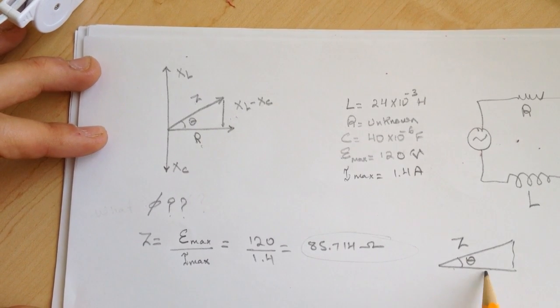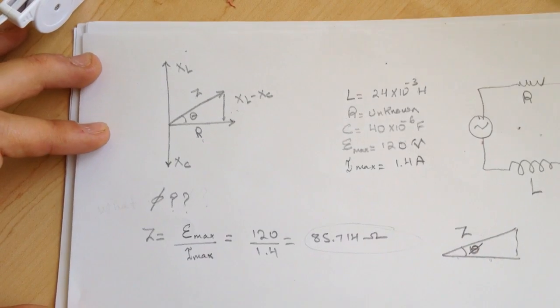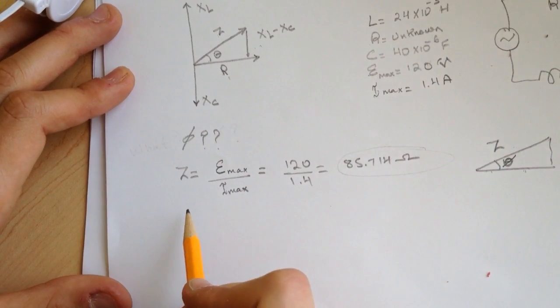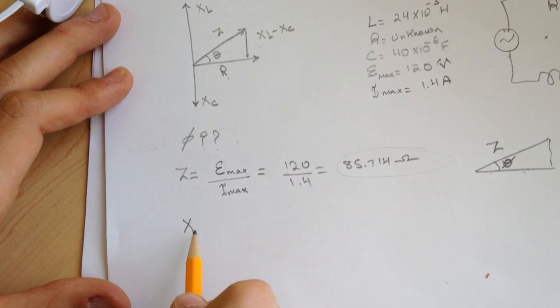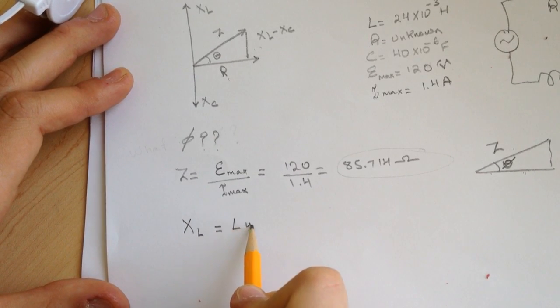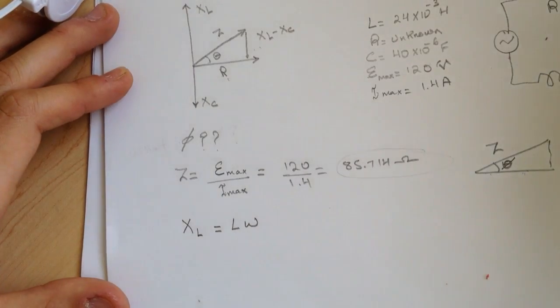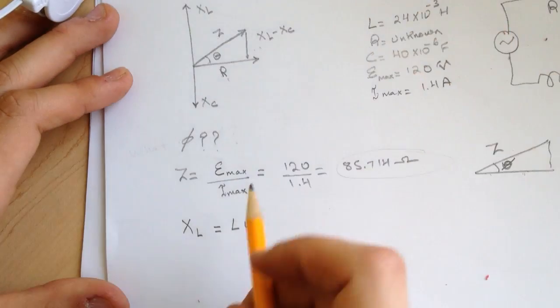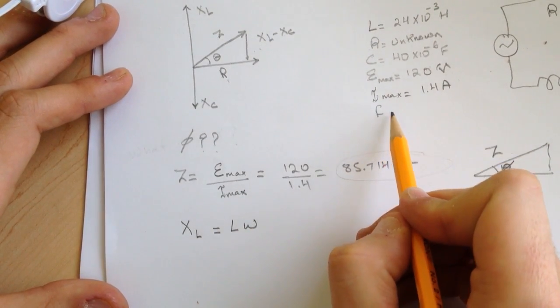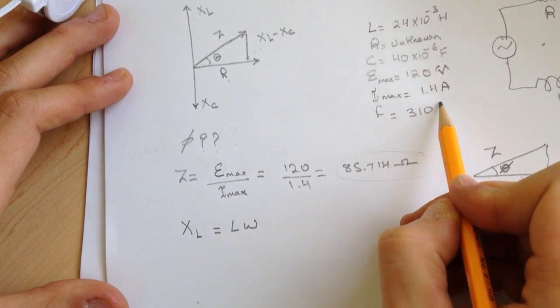If we have the R, we can just use the cosine, and we can find the phi for this one. So the reactance for the inductor is L omega. And we don't have the omega. We have the frequency actually. They gave us the frequency. I forgot to put it here. So the frequency is 310 hertz.